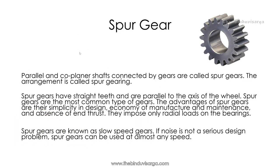Spur gears: parallel and coplanar shafts connected by gears are called spur gears, and the arrangement is called spur gearing. Spur gears have straight teeth and are parallel to the axis of the wheel. Spur gears are the most common type of gears. The advantages of spur gears are their simplicity in design, economy of manufacture and maintenance.